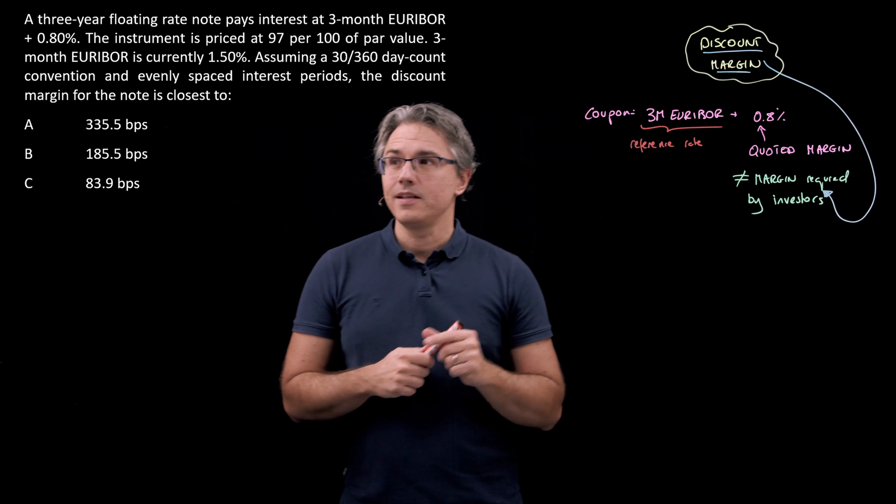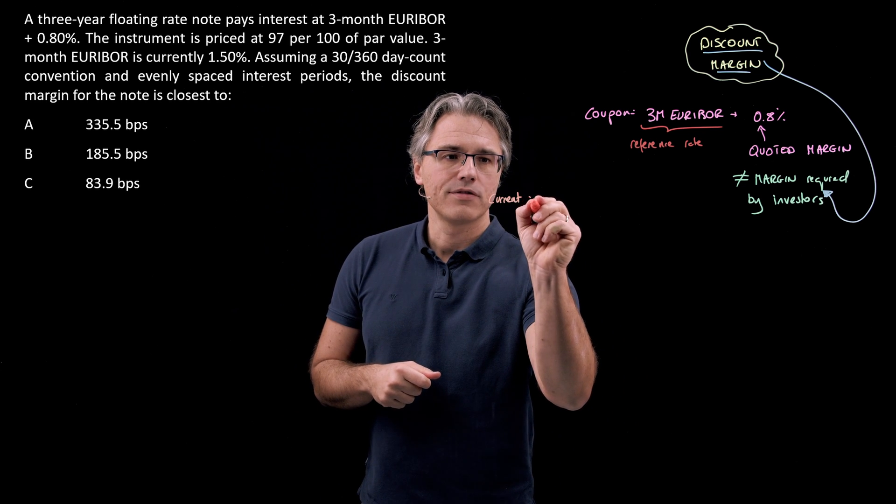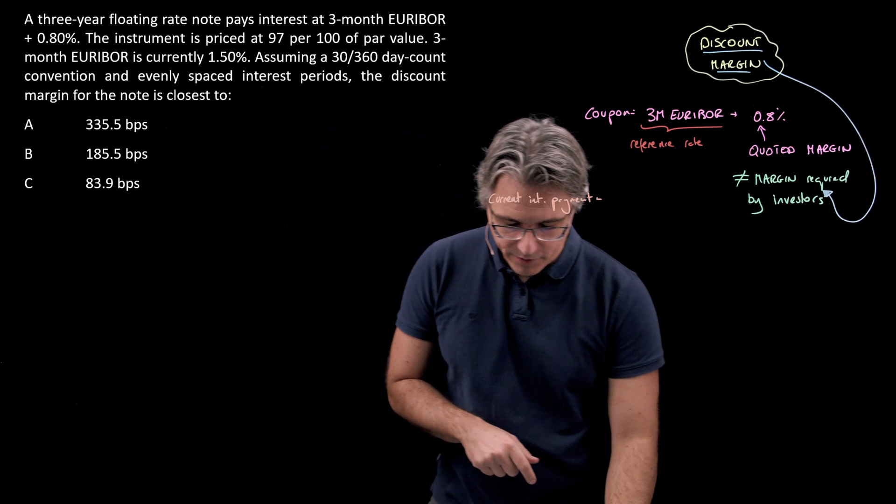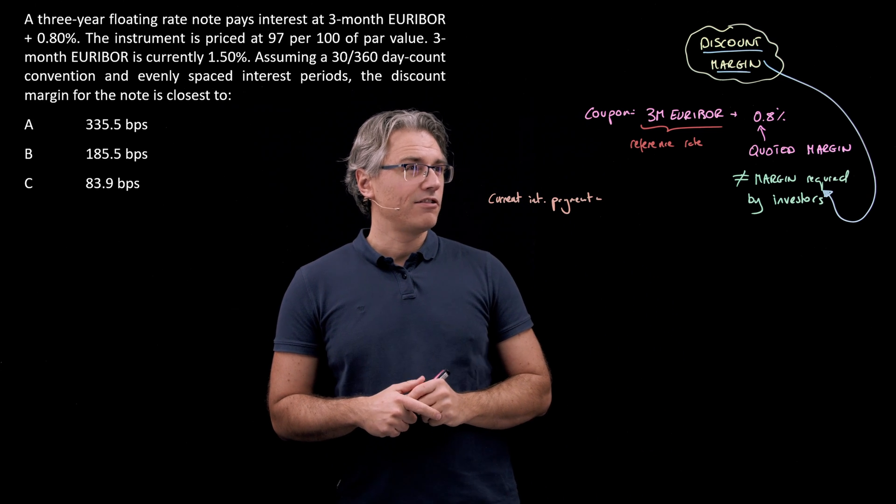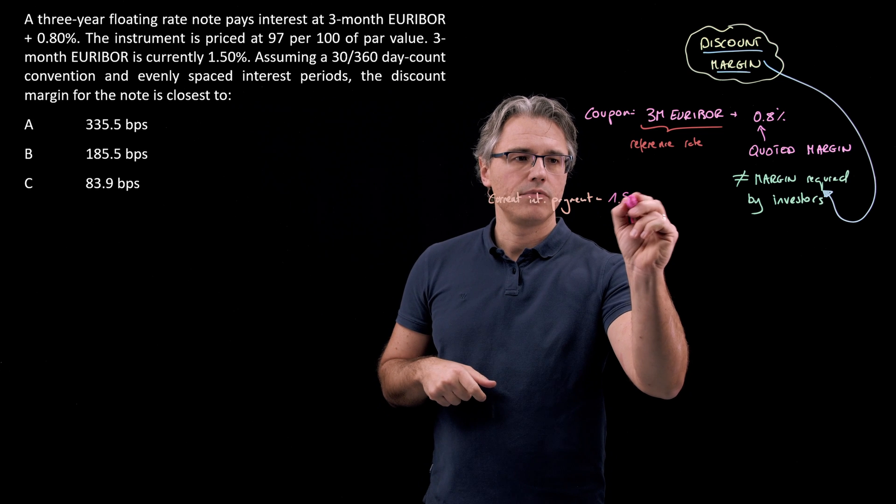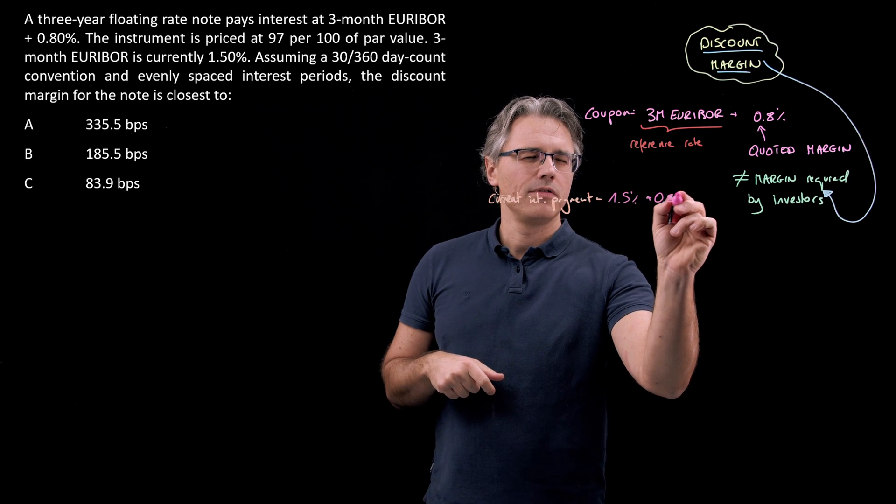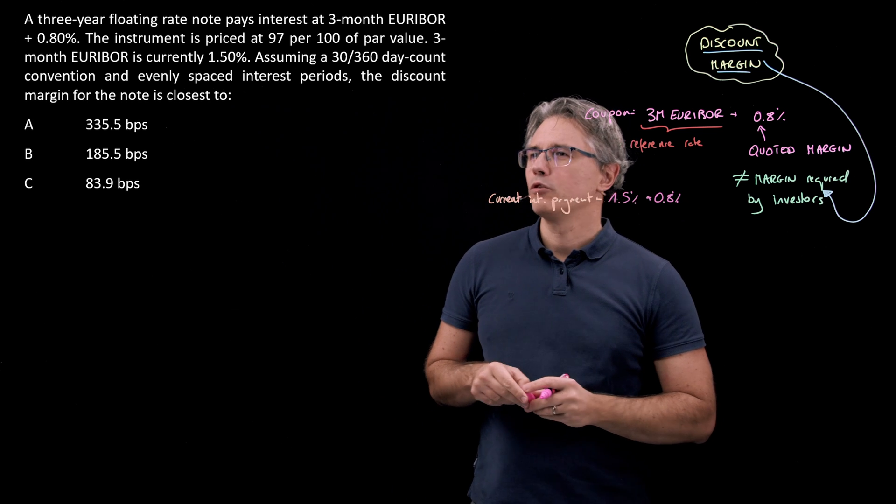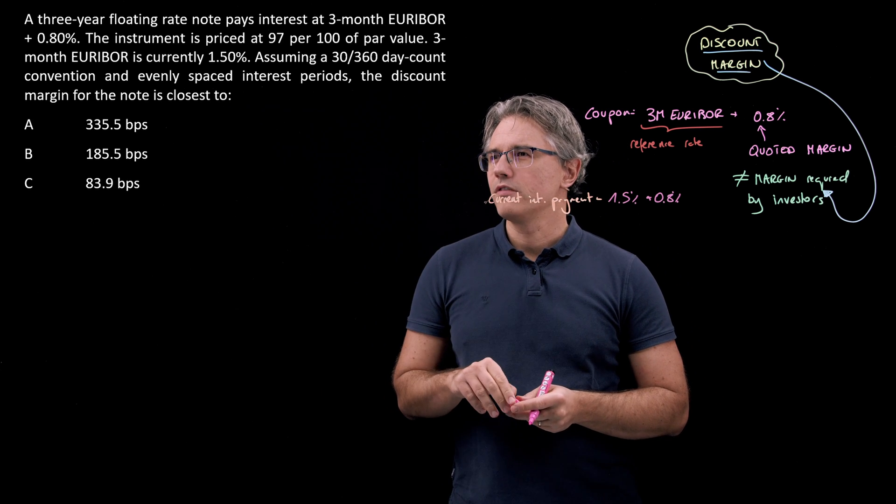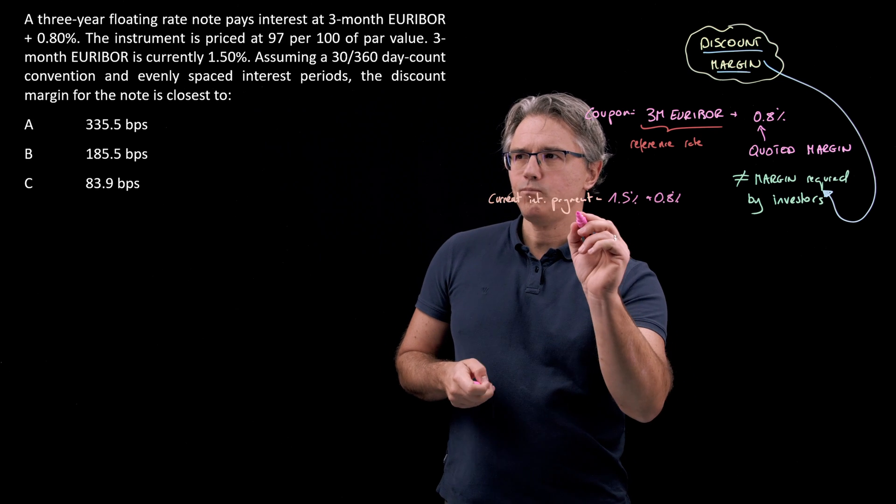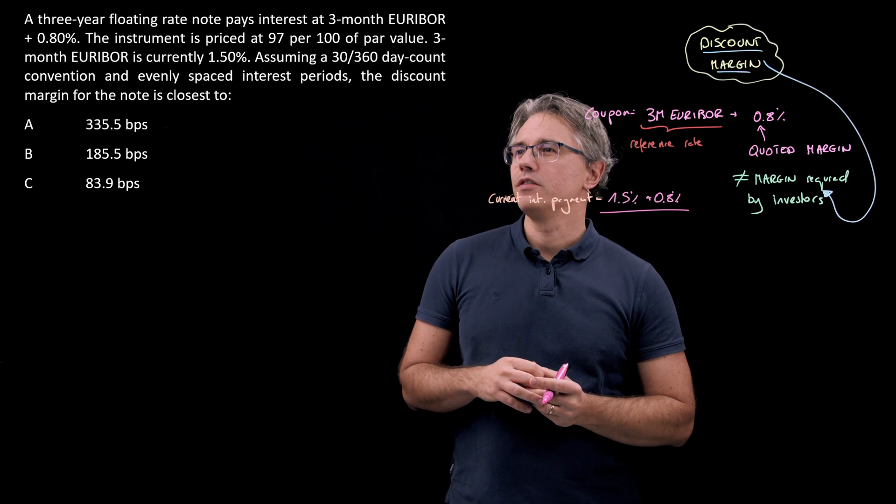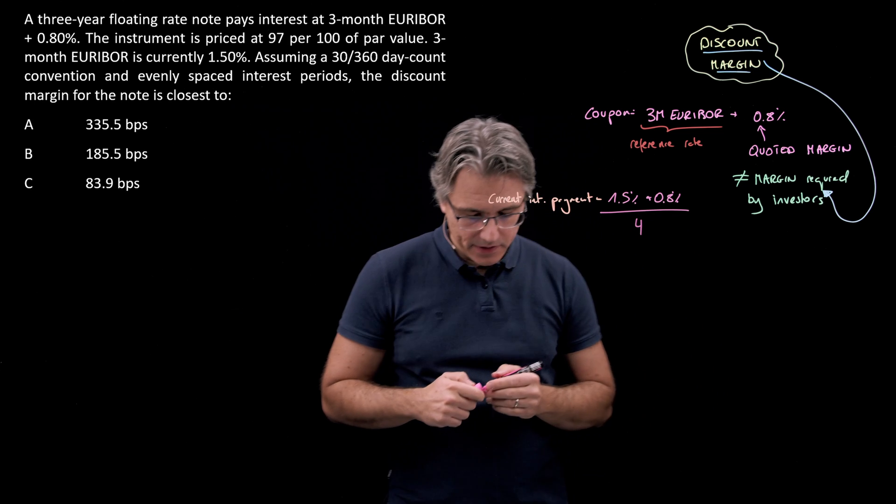First, let's compute the current interest payment or coupon payment. Given the relationship 3-month EURIBOR plus 0.8%, and current 3-month EURIBOR is 1.5%, we have 1.5% plus 0.8%. Because these are quarterly payments—a three-year floating rate note pays interest at 3-month EURIBOR, providing quarterly payments—we divide this by four to get the actual figure.